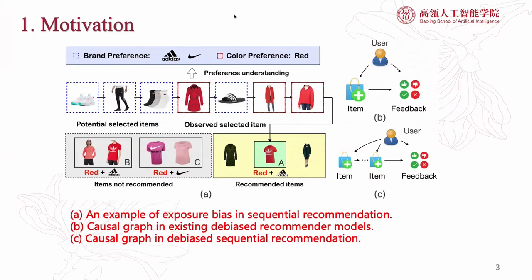As you can see in the slide, according to the interaction history, we can infer that the user likes sports brands Nike and Adidas, and is recently interested in red clothes. As a result, a red Adidas t-shirt is observed in the data as the next item. The observation of an item is jointly determined by the user sequential preference and the item recommendation probability. In this example, a red necklace or other red Adidas clothes are also relevant items, but these items are not recommended to the user, and so have fewer opportunities to be observed.